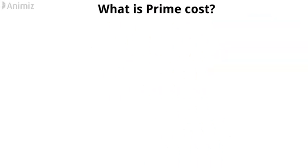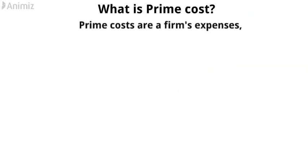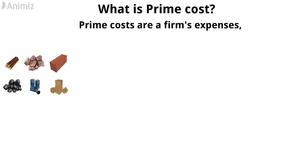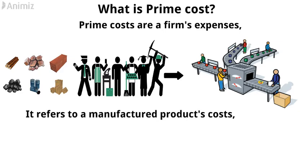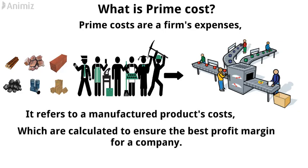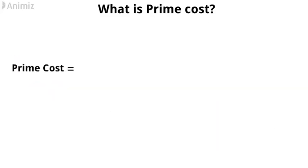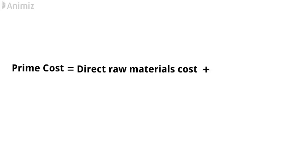What is prime cost? Prime costs are a firm's expenses directly related to the materials and labor used in production. It refers to a manufactured product's costs, which are calculated to ensure the best profit margin for a company. To calculate the prime cost, add direct raw materials cost and direct labor costs together.